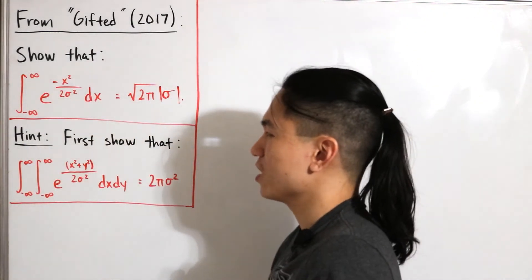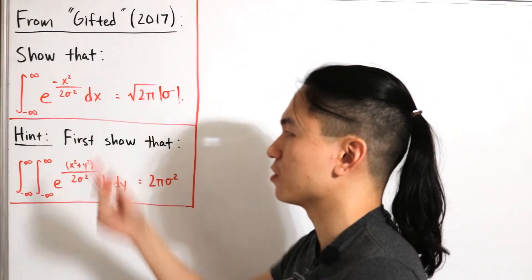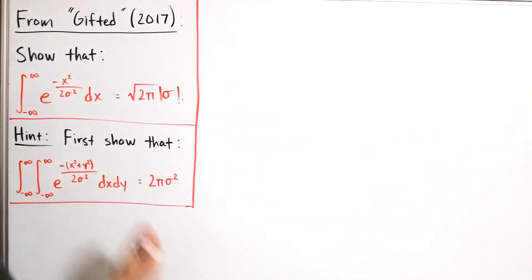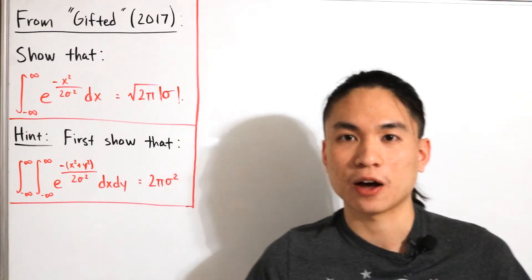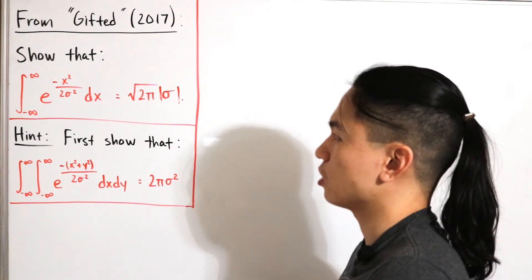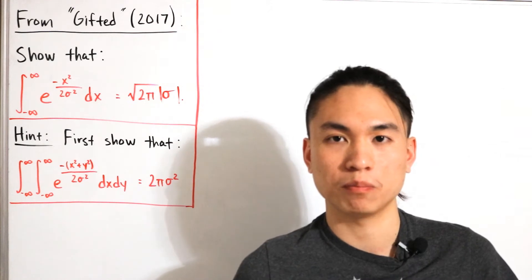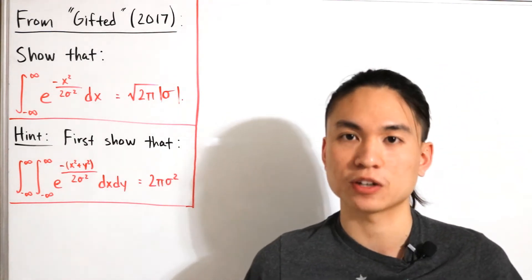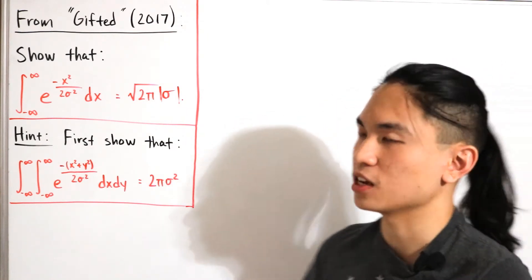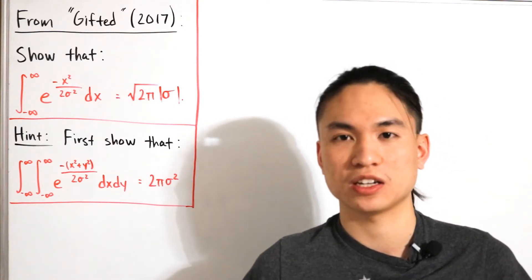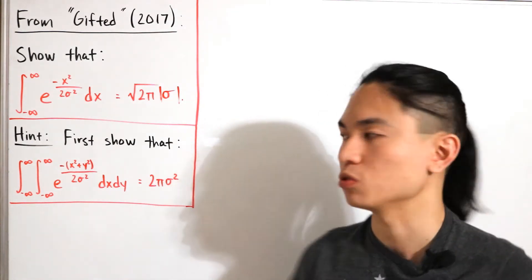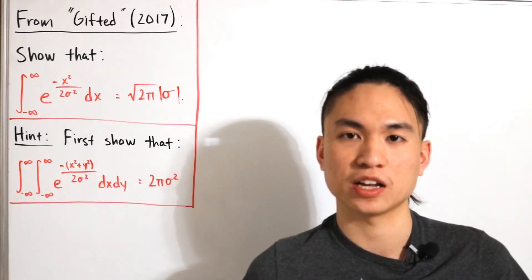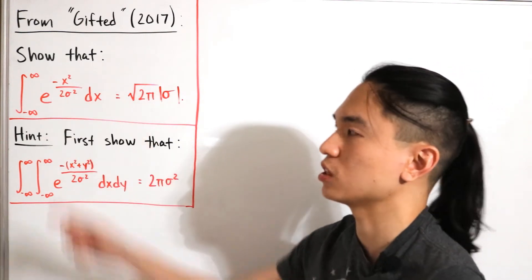Interestingly, when she makes the fix in the film, the hint given also has a missing negative sign. Once both errors are corrected — adding the negative sign and the absolute value on sigma — the integral is solvable. This integral is in the form of a Gaussian integral. I previously did a video on the standard form of e to the negative x-squared; that video is linked in the description below.